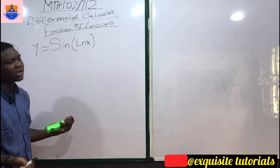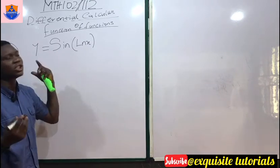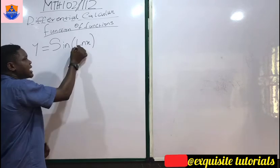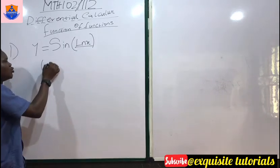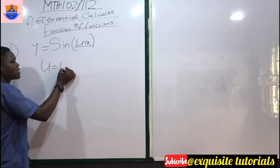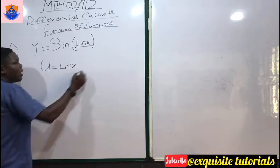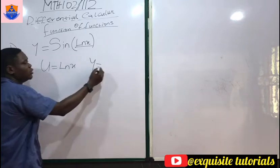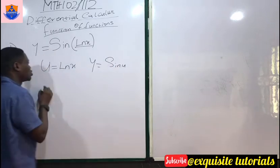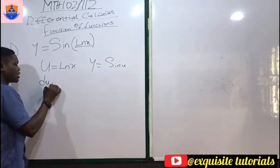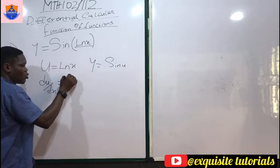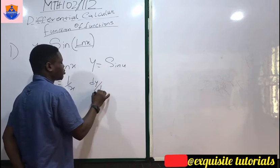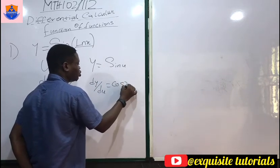How do we differentiate this? It's still very easy. We let u equal the inner function, so u = ln x, and y becomes sin(u). Then du/dx becomes 1/x, and dy/du becomes cos(u).